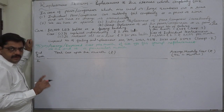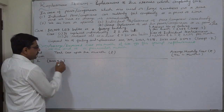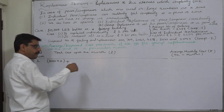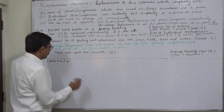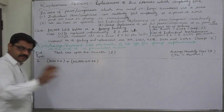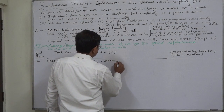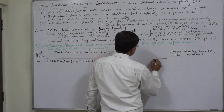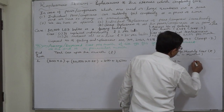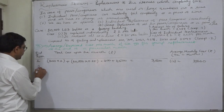If we go for group replacement at the end of the first month, during the first month we have to replace 300 bulbs at a cost of rupee 1 each as and when each bulb stops working. At the end of the last day of the first month, we change all 10,000 bulbs. So total cost is 300 plus 3500, which is rupees 3800. Divided by one month, the average monthly cost is rupees 3800.